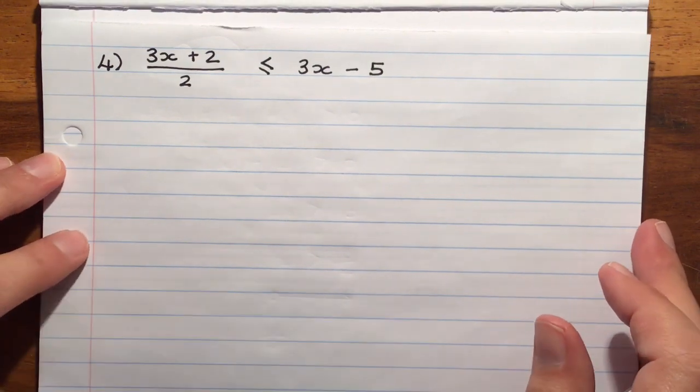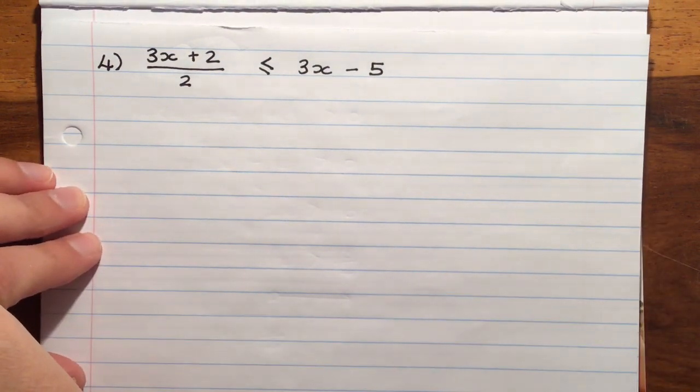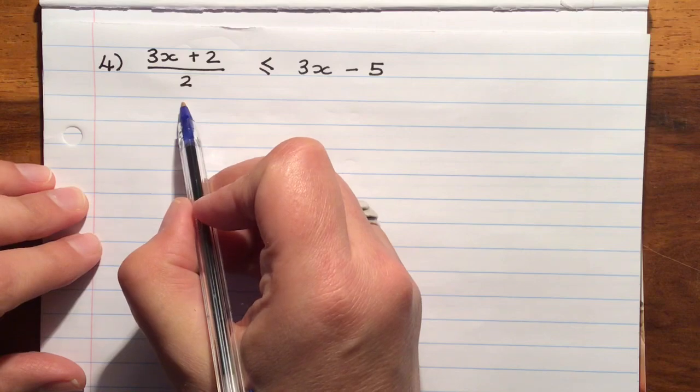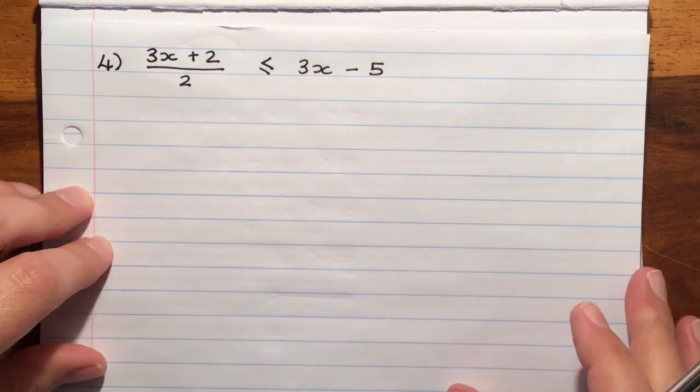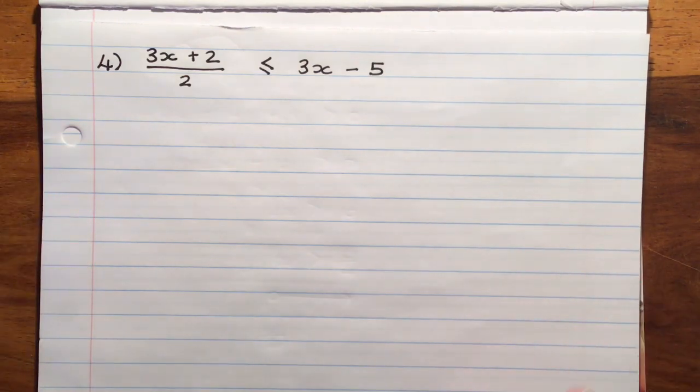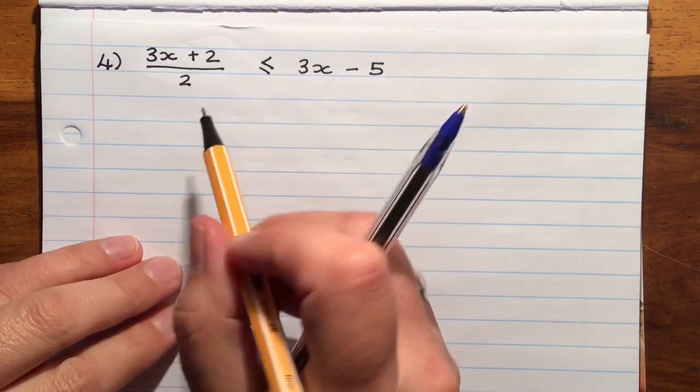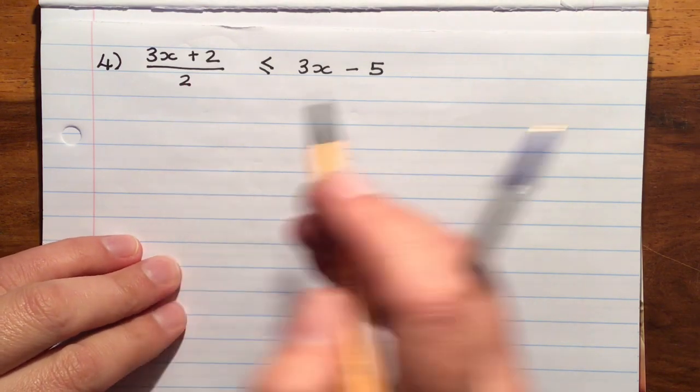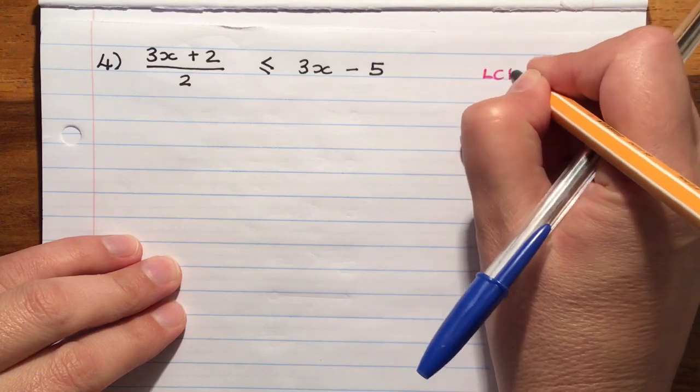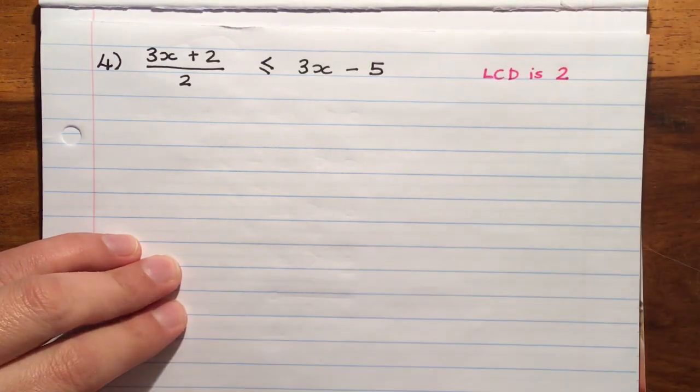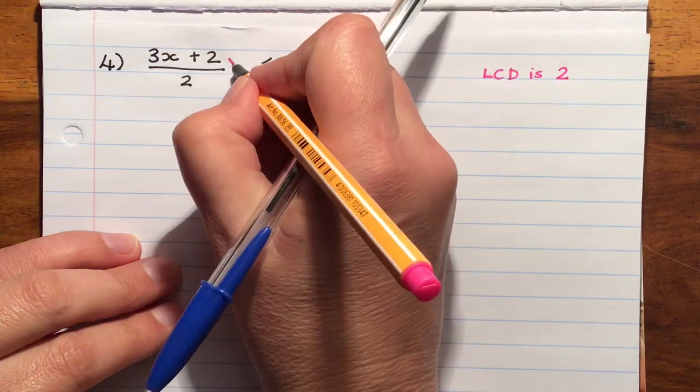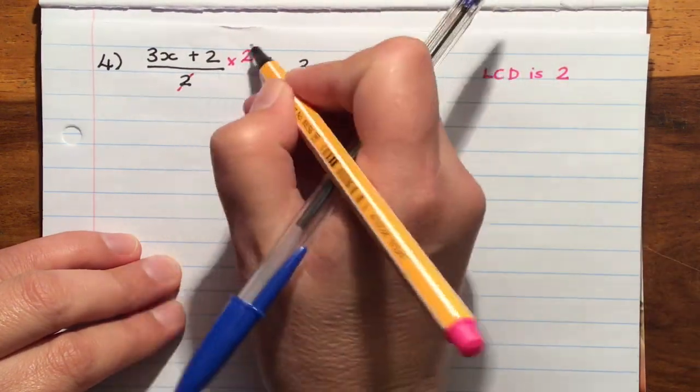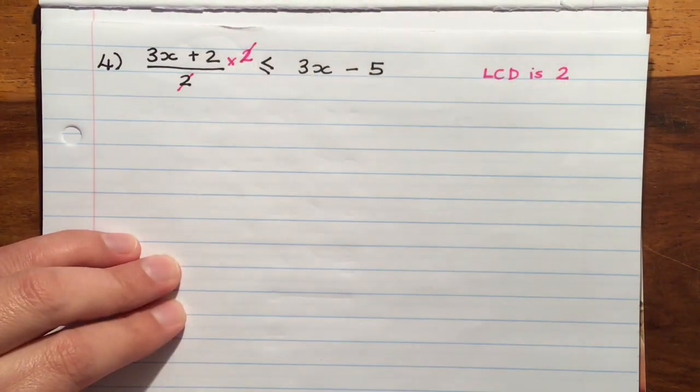Number 4 has a fraction in it. We've got 3x plus 2 over 2 on the left hand side. On the right hand side, we've got 3x minus 5. So when we're working with fractions, remember we have to look to see what its LCD is. This is an easy one because we've only got one fraction, so our LCD is 2. And then we are going to multiply everything by that LCD.